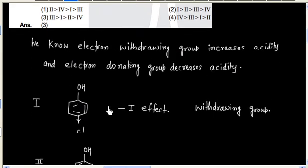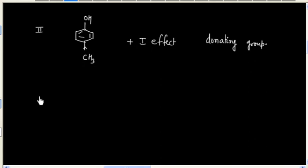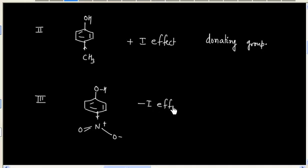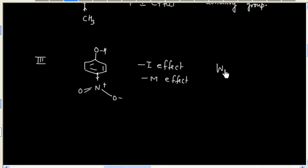Next we have NO2. In case of NO2, we will have minus I as well as minus M effect. So we have electron withdrawing effect. So NO2 is an electron withdrawing group.